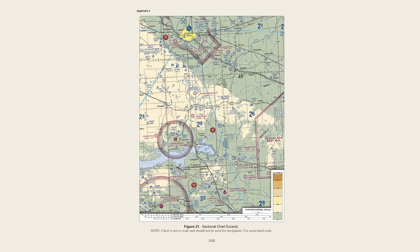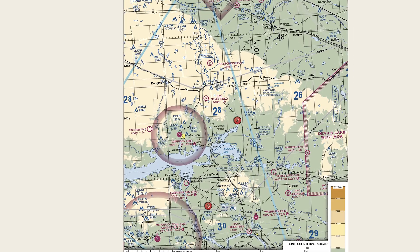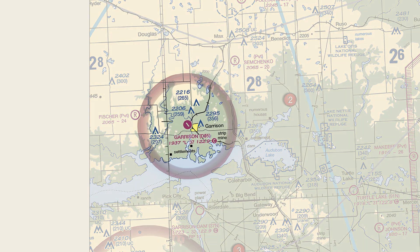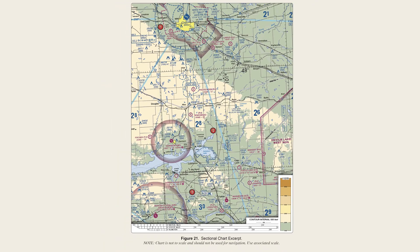Let's take a look at some real-life examples you'll probably see on the written test. Looking at this sectional, let's say a question asks you to calculate the latitude and longitude of Garrison Airport right here. We can calculate either one first — it doesn't really matter — but make sure you don't get them intertwined. We're calculating two separate values: a latitude and a longitude.